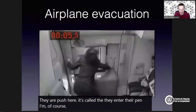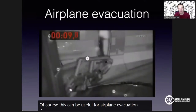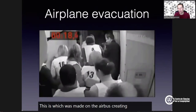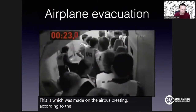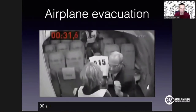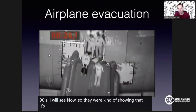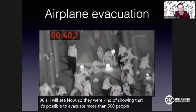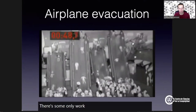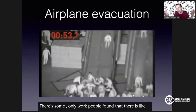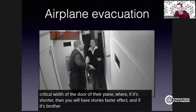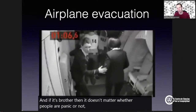This can be useful for airplane evacuation. There was a test made on the Airbus 380. According to the IATA, in order to have a license to fly, an airplane must be evacuated in 90 seconds. They showed it's possible to evacuate more than 500 people in a minute and a half. Early work found that there is a critical width of the airplane door: if it's narrower, you get the slower-is-faster effect, but if it's broader, the faster people go, the faster they exit.